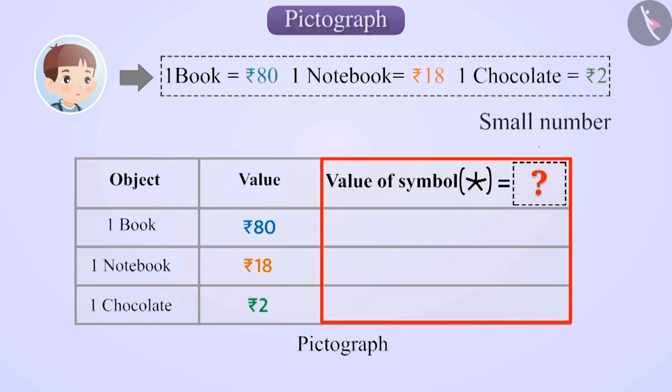If you take the value of the symbol a small number, such as Rs. 5, then you will find it easier to denote Rs. 2 and Rs. 18. But you will face difficulty while drawing many symbols to represent Rs. 80.